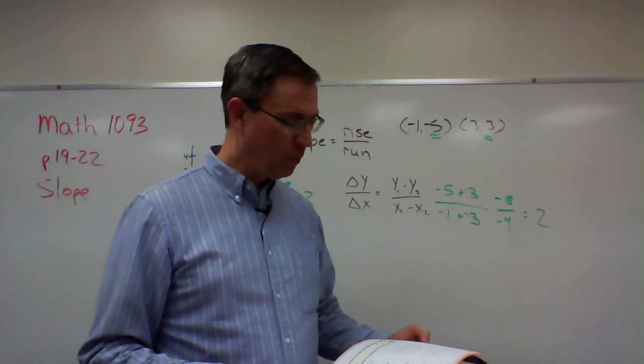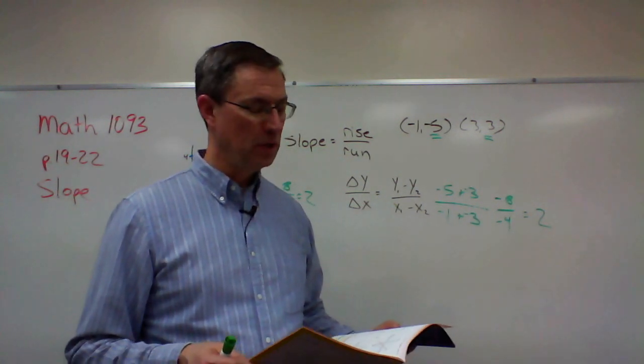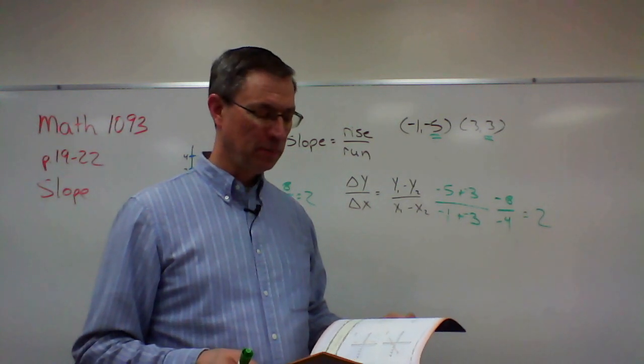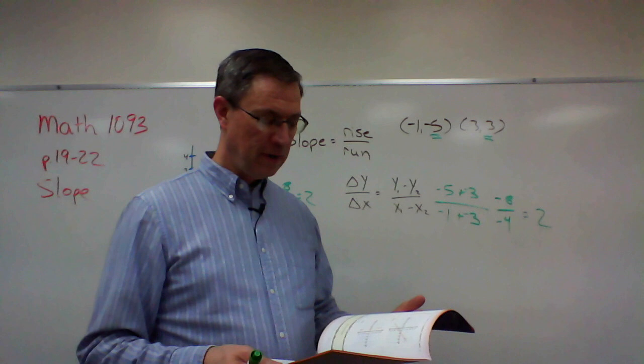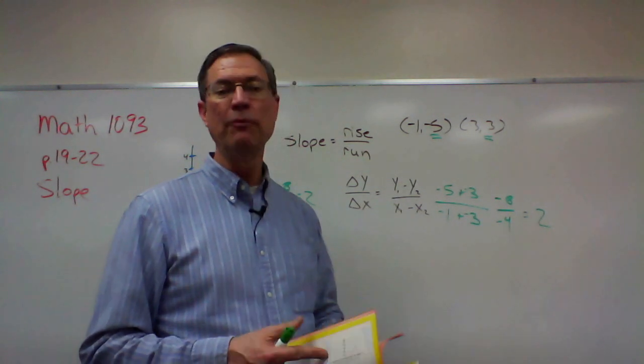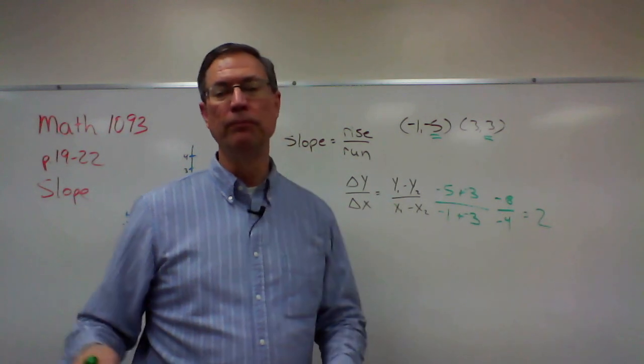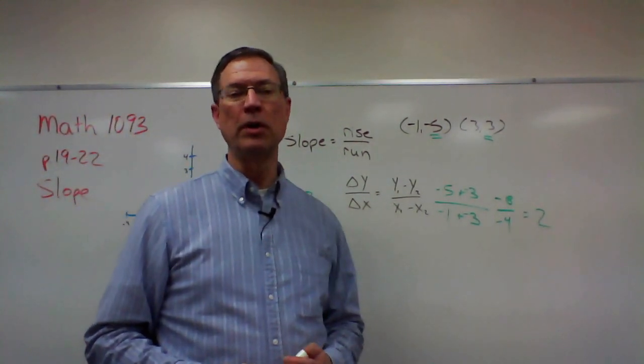And then on pages 21 through 22, they have you just write multiple choice. It's either positive, negative, zero, or undefined. And the pace explains about that. I'm not going to take any time to do that. And then on 22, we're back to graphing some lines and figuring out what the slope would be. All right, we'll come back and talk about another lesson.